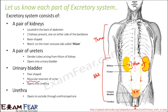To summarize: kidneys are the places where urine is formed, ureters carry the urine, the urinary bladder stores the urine, and the urethra expels the urine out of the body. In simple words, those are the functions of each part of the excretory system. Now, urine formation is the most interesting and also the most complex topic, which is why we need to know the structure of the kidneys in more detail before we can understand the process.